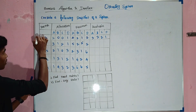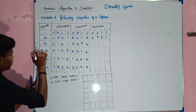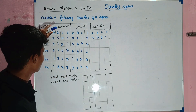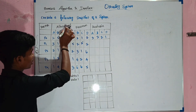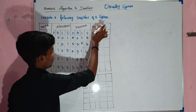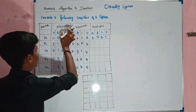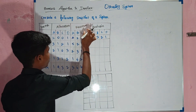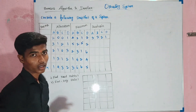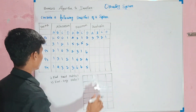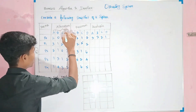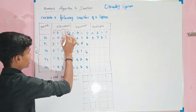This is the setup process. Next, the allocation and maximum tables are given, and the available resources are listed. The resources are R1, R2, R3, and the common variables are A, B, C, D.